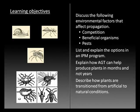Learning objectives will be to look at the remaining environmental factors that affect propagation: competition, beneficials, and pests. We'll also list and explain some of the important options in an integrated pest management program, explain how accelerated growth techniques can help produce plants in less time and at higher quality, and describe how plants are transitioned from artificial to natural growth conditions.